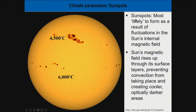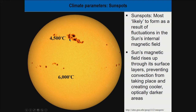The most likely reason for sunspots is that there are fluctuations in the Sun's magnetic field, and because of that, convection is not taking place in certain parts of the Sun, which leads to these dark spots appearing. Where we don't have sunspots, the Sun's surface is about 6,000°C. Where we do have sunspots, it's only about 4,500°C — still extremely hot, but there's a big temperature difference depending on whether sunspots are present.